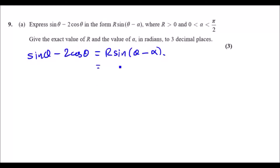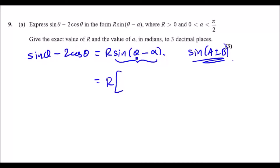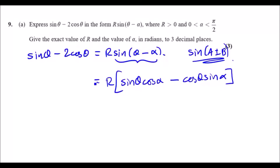Now, realize that R sin(θ - α) is one of those expanded trig forms — in the form of sin(A ± B). Always try to keep this in mind. So we can say this must be equal to sin θ cos α minus cos θ sin α, which is the sin(A - B) expansion.